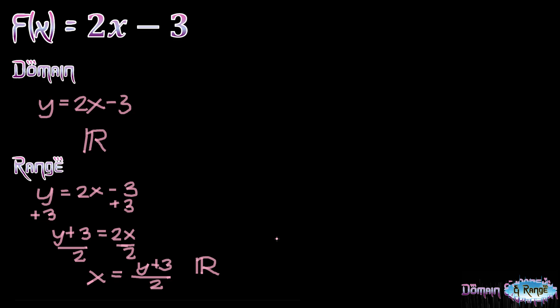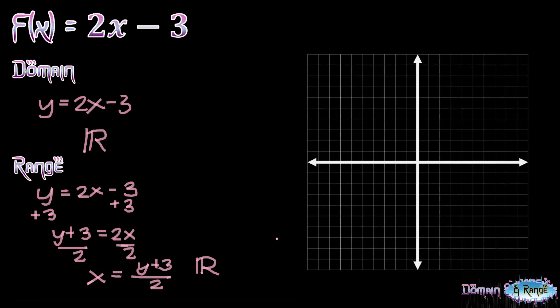To illustrate further, let's use this Cartesian plane. We'll pick two values of x that will give us representative values for y. Since this is a linear function, we expect the graph to be a line, and two points are enough to determine the line. If x is 1, y is equal to 2 times 1 minus 3, which is negative 1. So our first point is at (1, negative 1). If x is equal to negative 2, y is equal to 2 times negative 2 minus 3, which is negative 7.